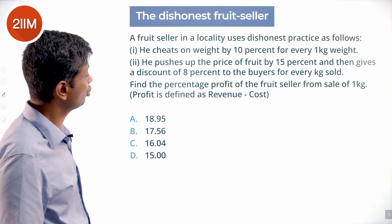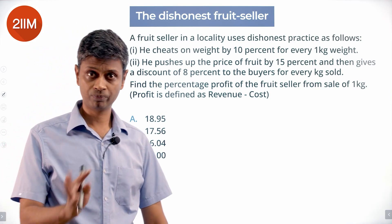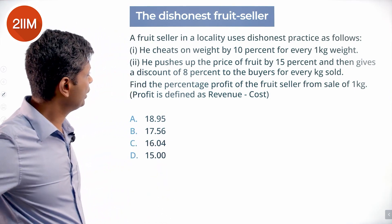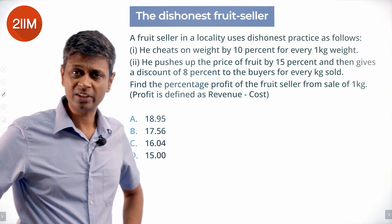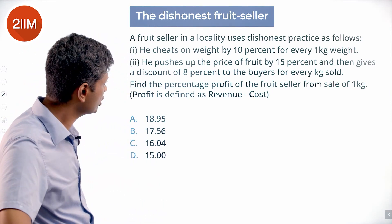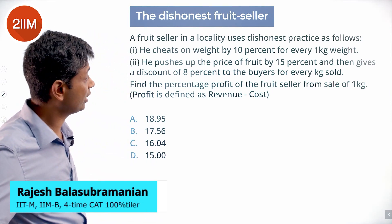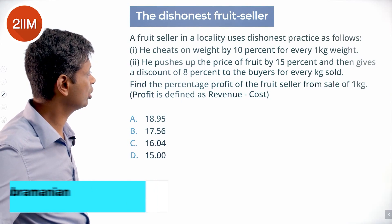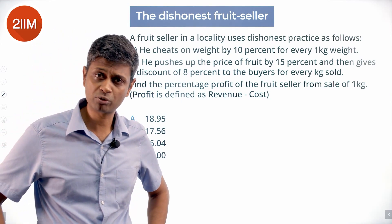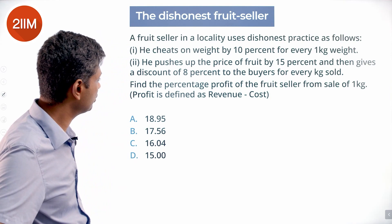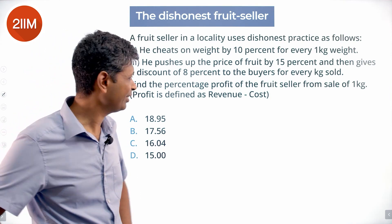A fruit seller in a locality uses dishonest practices: he cheats on weight by 10% for every 1 kg, pushes up the price of fruit by 15%, and then gives a discount of 8% to buyers. Find the percentage profit of the fruit seller from the sale of 1 kg.